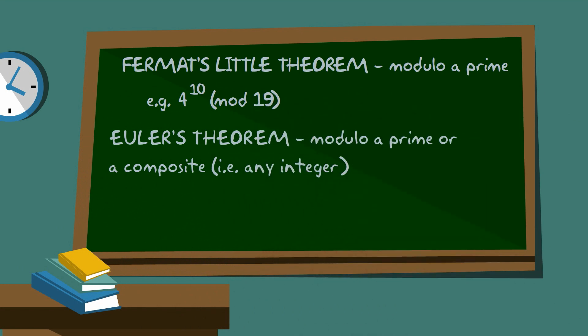It's called Euler's Theorem. It's a very important generalisation of Fermat's Little Theorem, and so it's important to understand Fermat's Little Theorem to start with. So let's go to the first question.